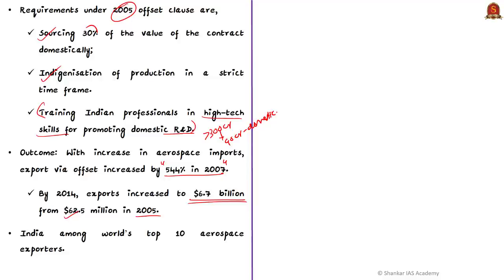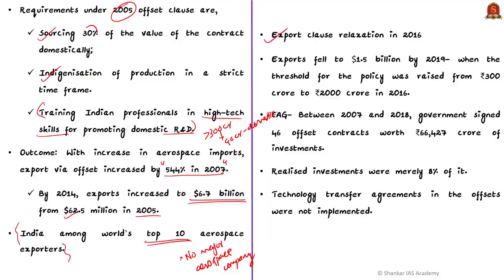India is the only country in the top 10 without a major domestic aerospace company. However, the success story was short-lived, mainly because exports significantly reduced after the offset clause was relaxed. Initially in 2016, the threshold was increased from 300 crores to 2000 crores. So from 2016, the 30% offset clause applies only if the defense order exceeds 2000 crores. The 2005 policy had helped promote a vibrant aerospace cluster, mostly MSME companies around Bangalore.